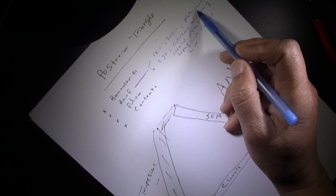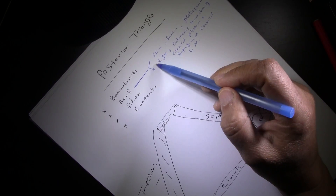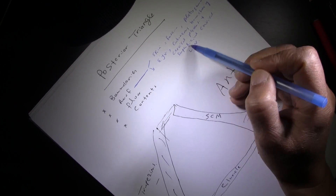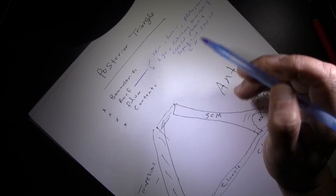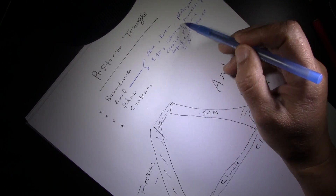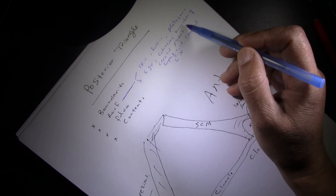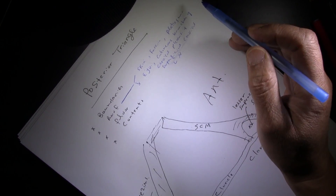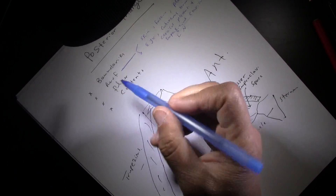In the roof of the triangle you will see the external jugular vein. In addition to that, you have cutaneous branches from the cervical plexus, which are visible on the surface of the triangle.